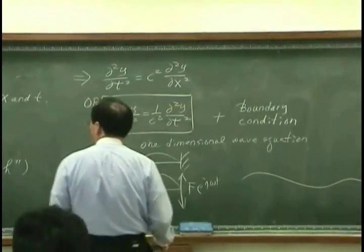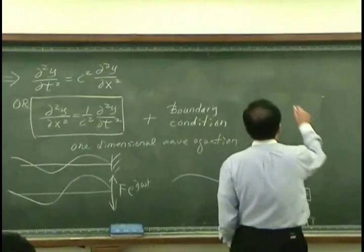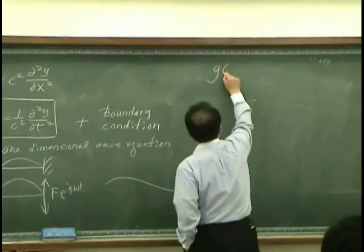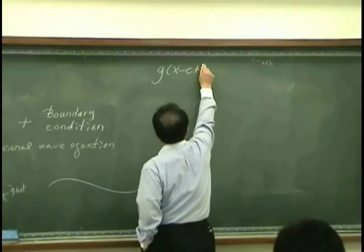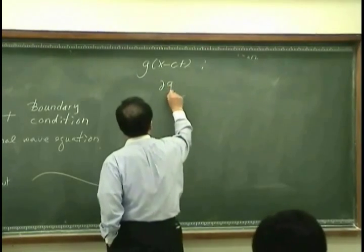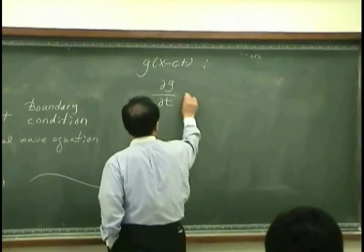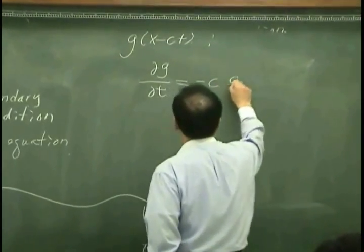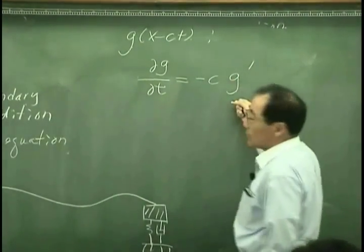Another interesting point. Let's go further. G, let's look at G first. dG/dt, that is the velocity of right going wave. That is a C G prime. What does it mean?